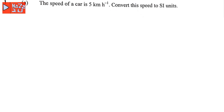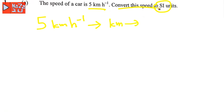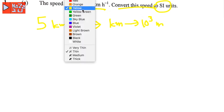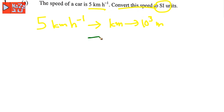Question number one: the speed of a car is 5 kilometers per hour — convert this speed to SI units. You have 5 km/h. The SI unit for distance is meters, so converting 5 kilometers to meters gives 5 times 10 to the power of 3 meters.